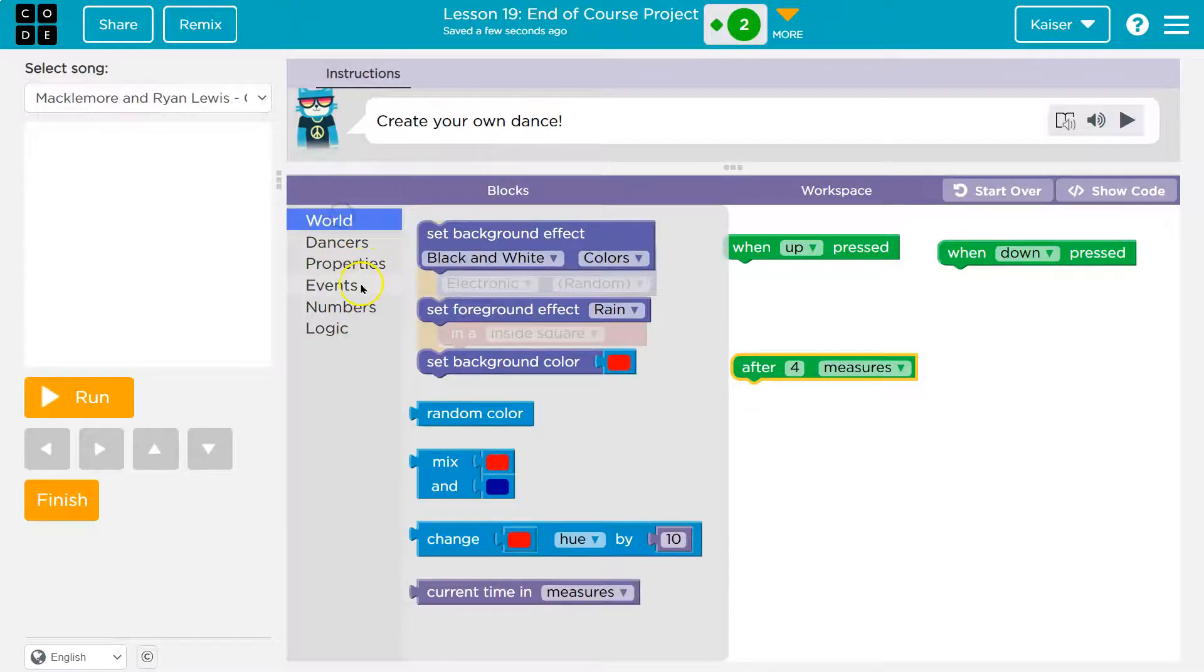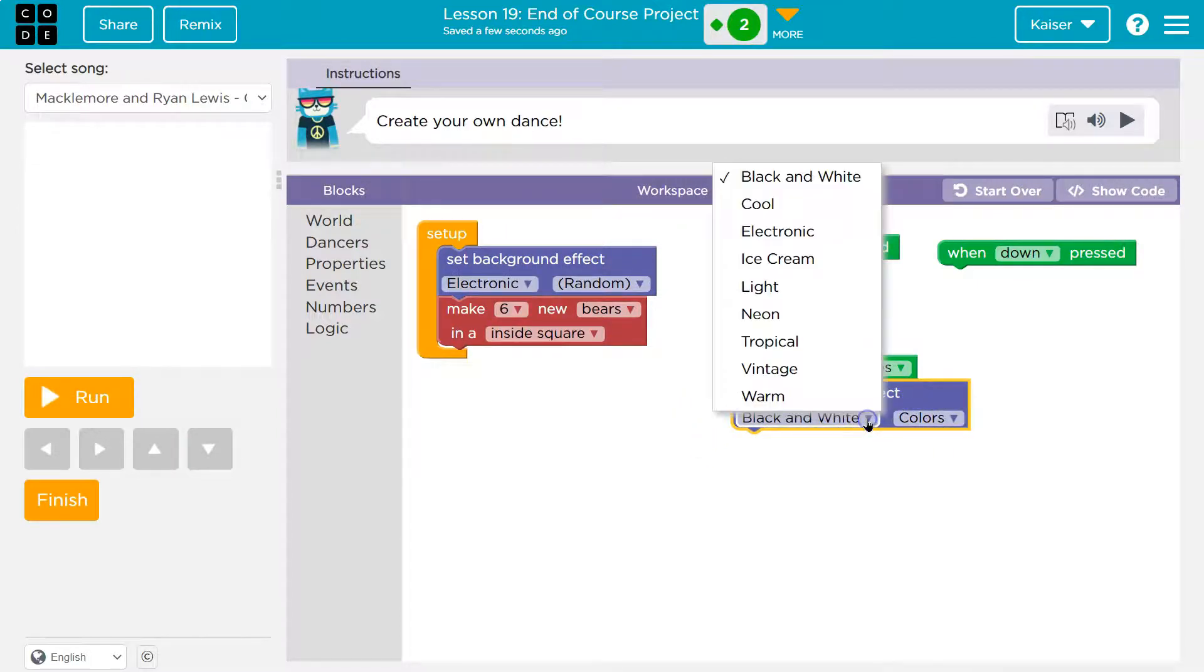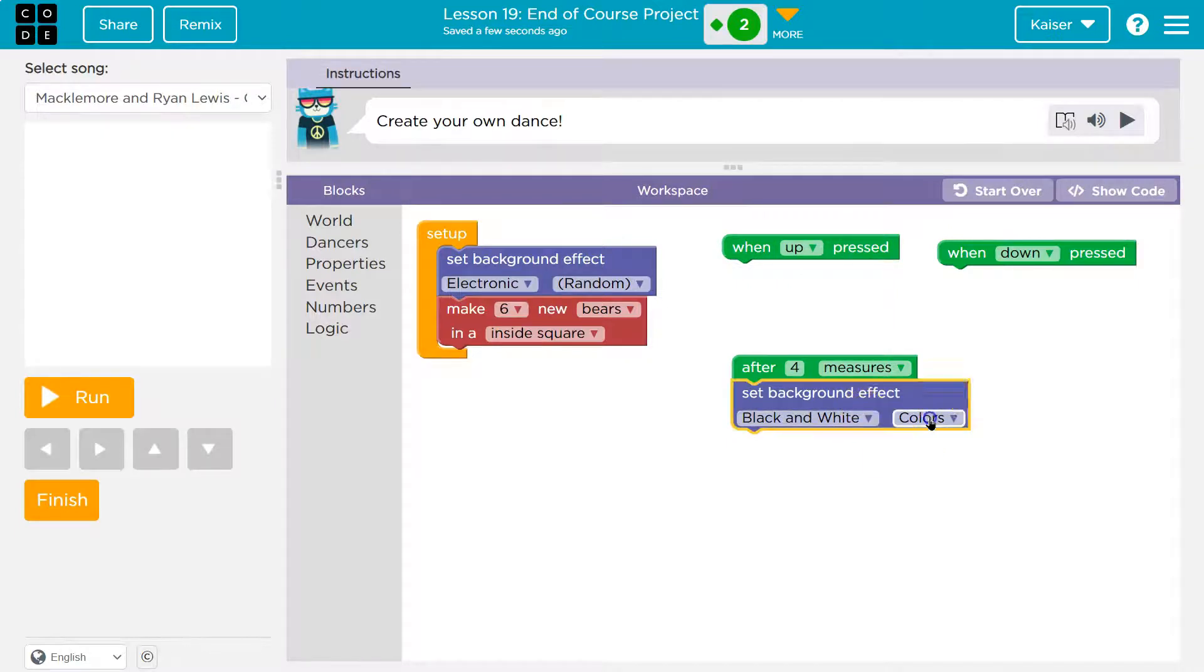Now, at ten measures, what do I want to have happen? When there's four measures of the song, at that point, we're going to go ahead and do set background color. And then an effect.